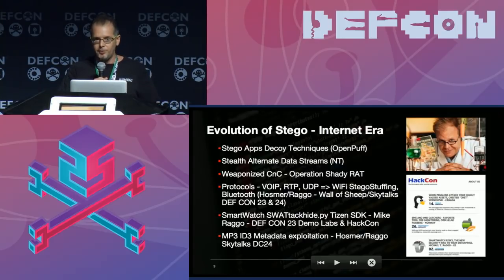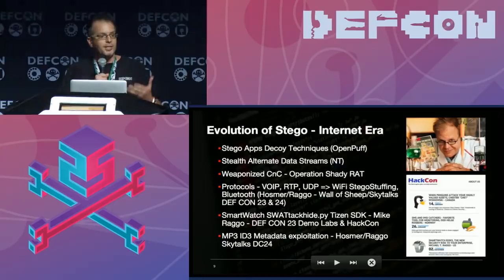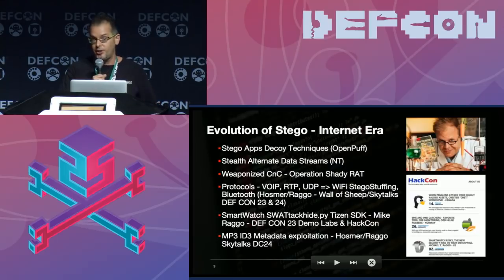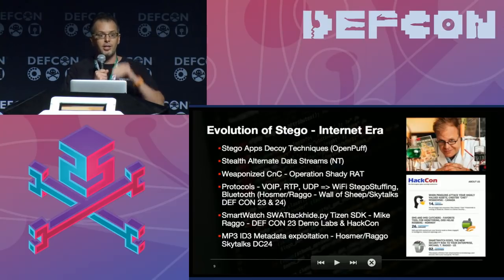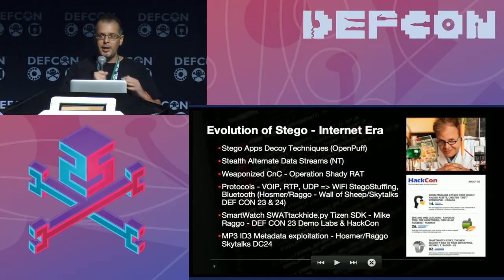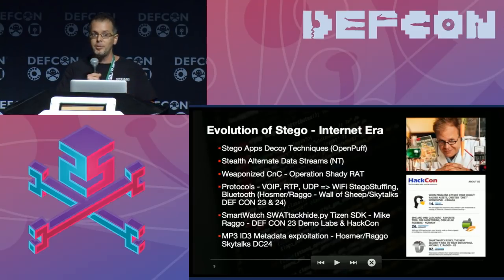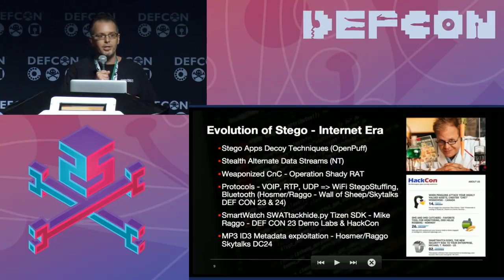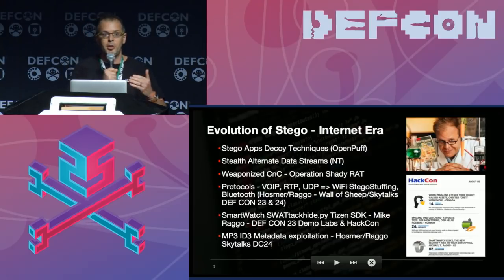A few years back, Operation Shady Rat demonstrated very weaponized steganography — using a callback to a WordPress site where updated instructions were hidden within an image that the malware would parse, extract, and use to update command-and-control information. Additionally, there was great research done at SANS around alternate data streams within the Windows NT operating system, such that things like LPT and other built-in NT features could also be exploited leveraging alternate data streams in a much more stealthy manner.